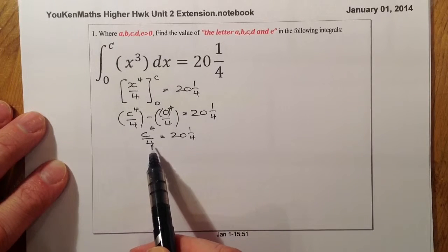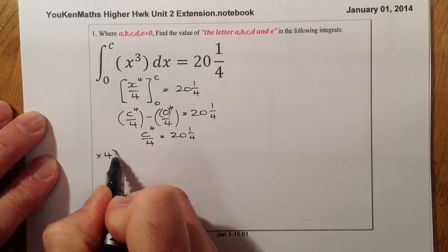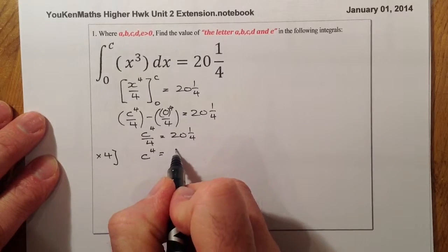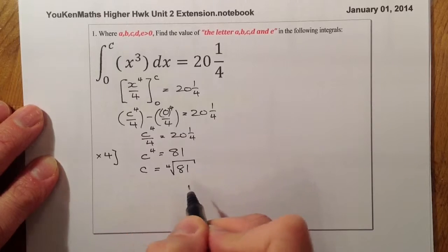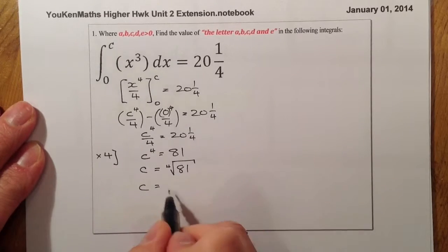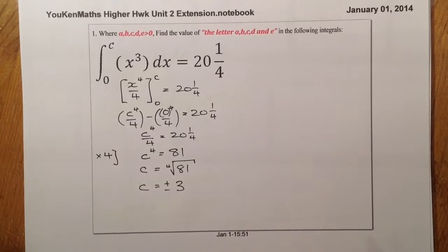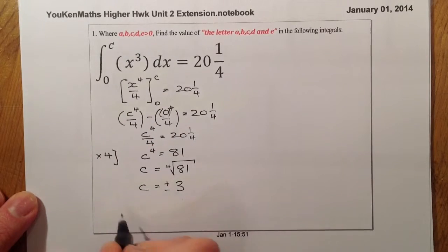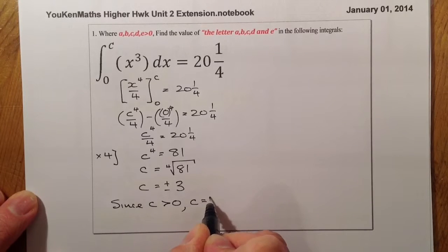So tidying up: C to the power of 4 all over 4 equals 20 and a quarter. To get rid of the fraction, multiply throughout by 4. That leaves C to the power of 4 equal to 4 times 20 and a quarter, which is 81. So C equals the fourth root of 81, which gives a positive or negative answer. That should be positive or minus 3 — since 3 × 3 = 9, × 3 = 27, × 3 = 81. Since C is greater than 0, C equals 3 only.